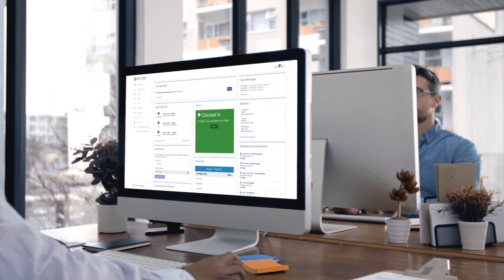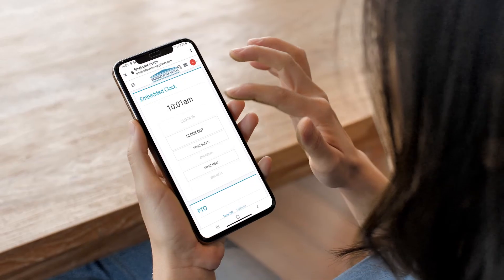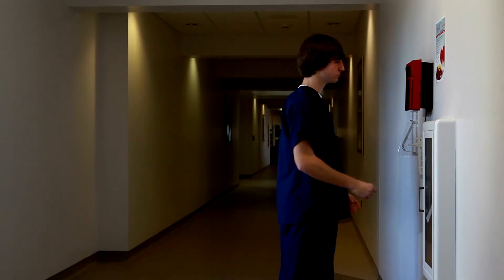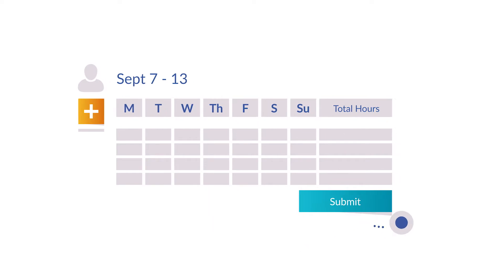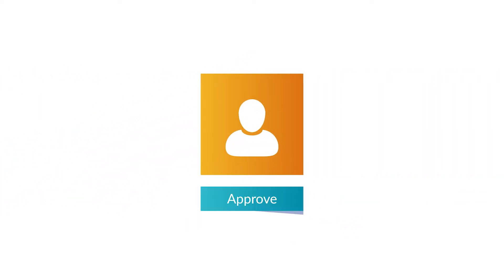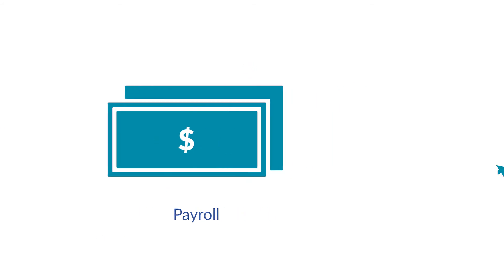Time and labor enables your team to clock in and clock out from any device, even physical clocks. And that time data flows seamlessly from employee input, to manager approval, to payroll, to reporting.